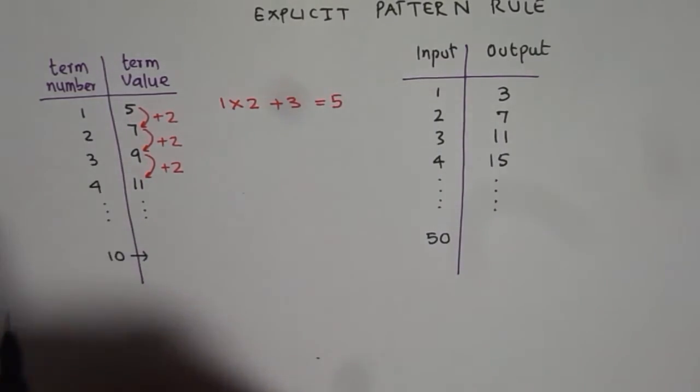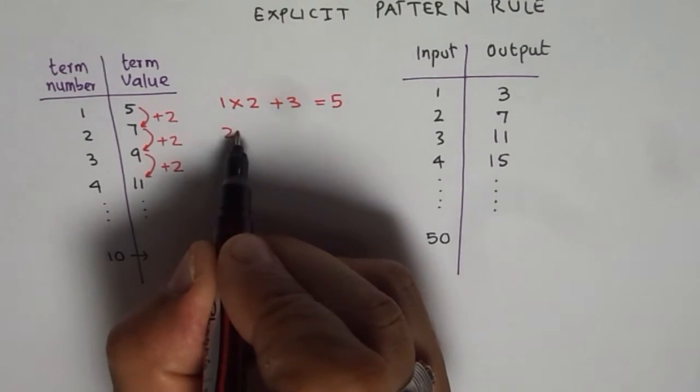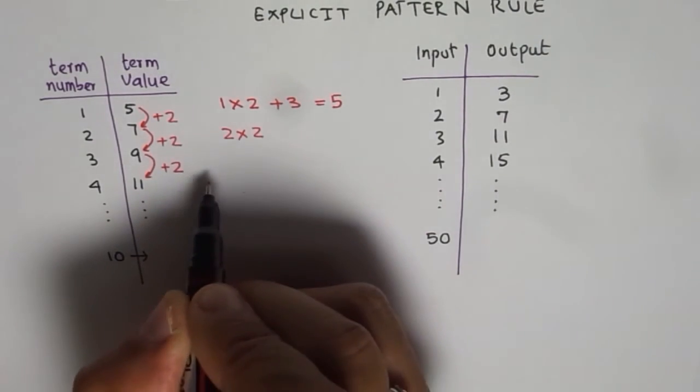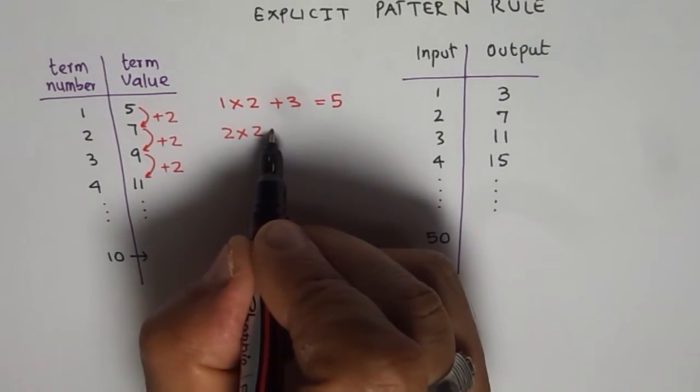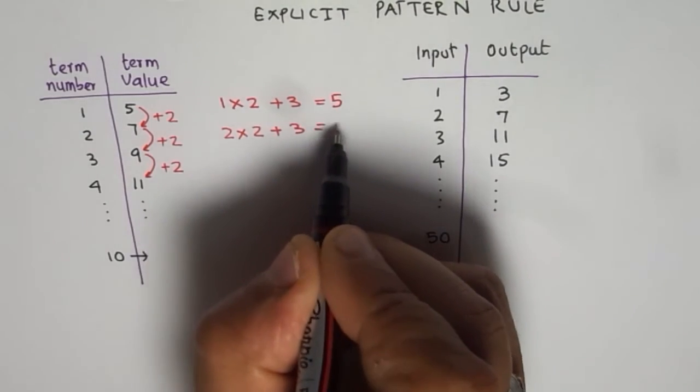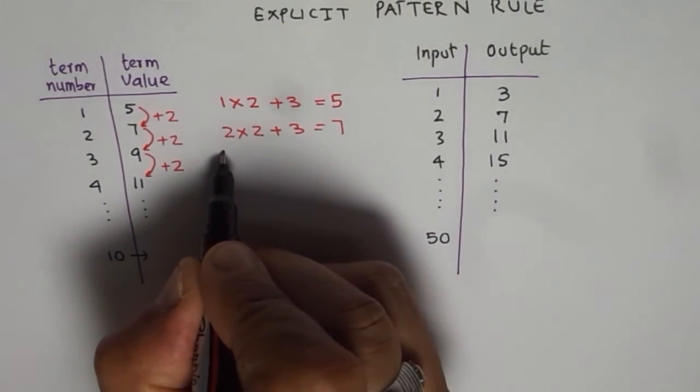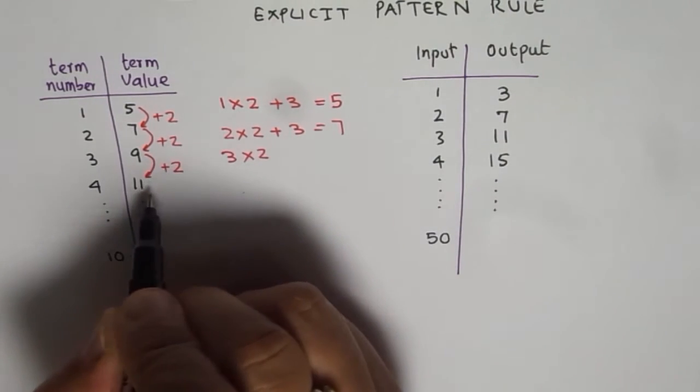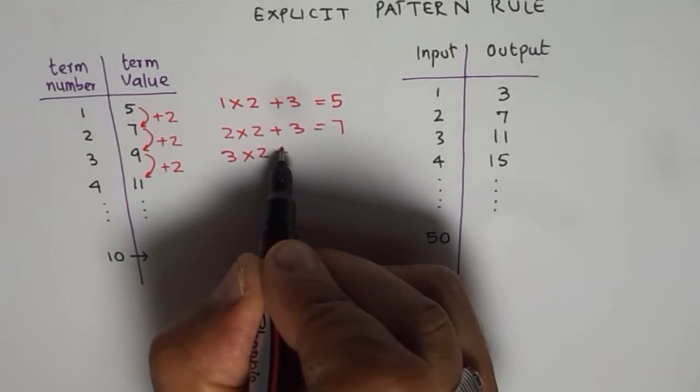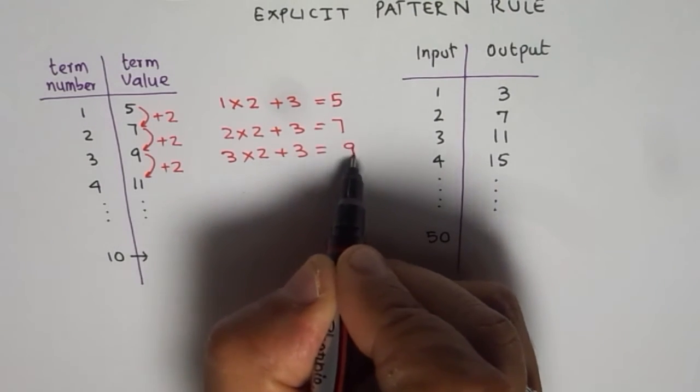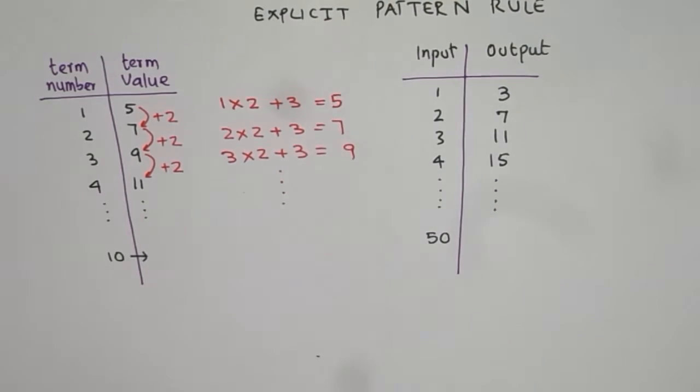Let us try with 2 and 7. 2 times 2 is 4 and how do I get 7 from 4? 4 plus 3 is 7. Perfect. Now with this 3, we can say 3 times 2 is 6. To get 9, I have to add 3. So this rule seems to work, right?